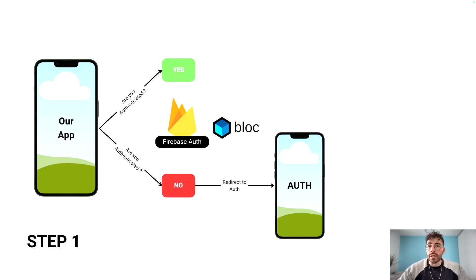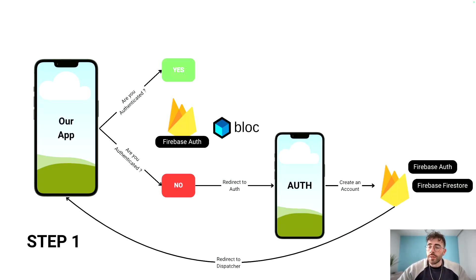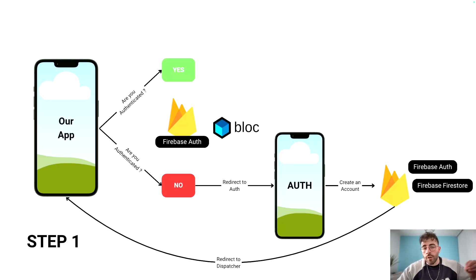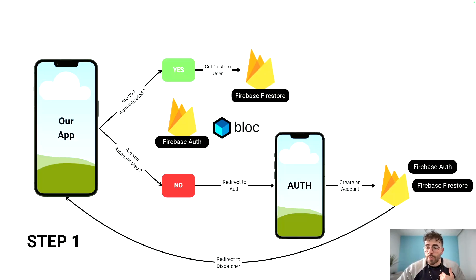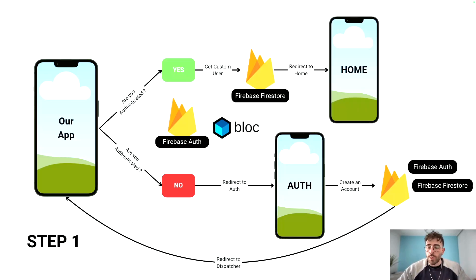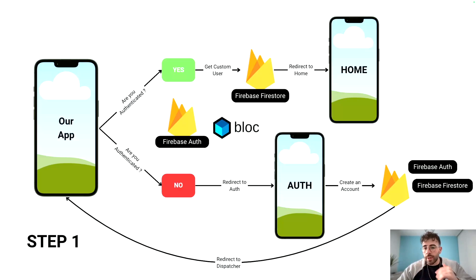If you're not authenticated, we redirect you to the authentication screen. Once there, you can create an account, sign up, or sign in — using Firebase Authentication and Firebase Firestore, the NoSQL database module of Firebase. Once you've created your account, we redirect you to the dispatcher, which is the entry point of the app. Now you're authenticated, we retrieve the custom user information stored in Firestore and redirect you to home. This path is also straightforward if you're already authenticated — we get the custom user from Firestore and redirect to home. That's how the whole authentication process is going to work.